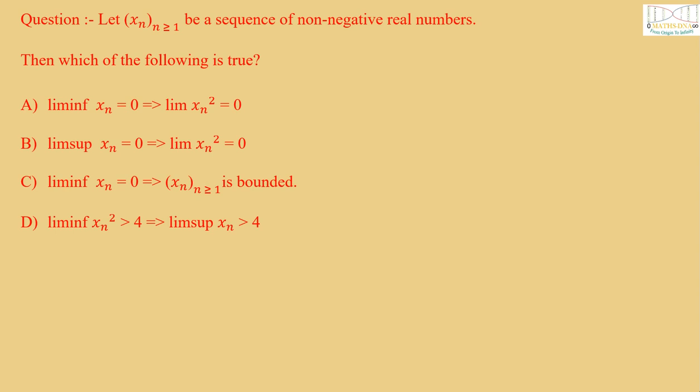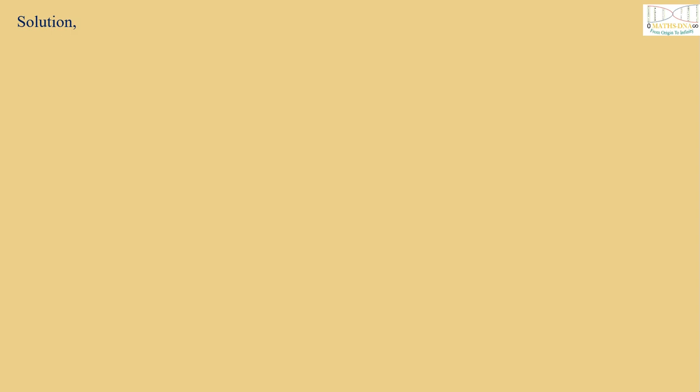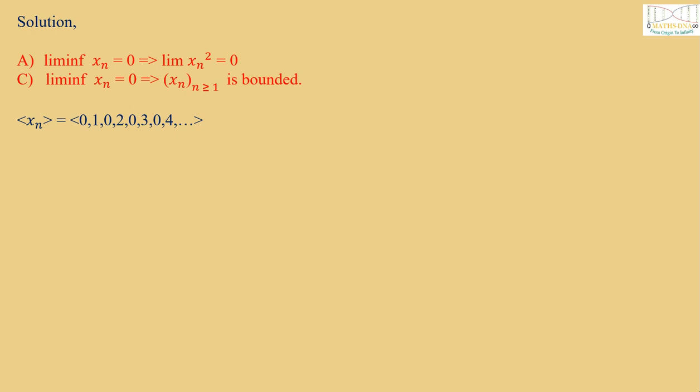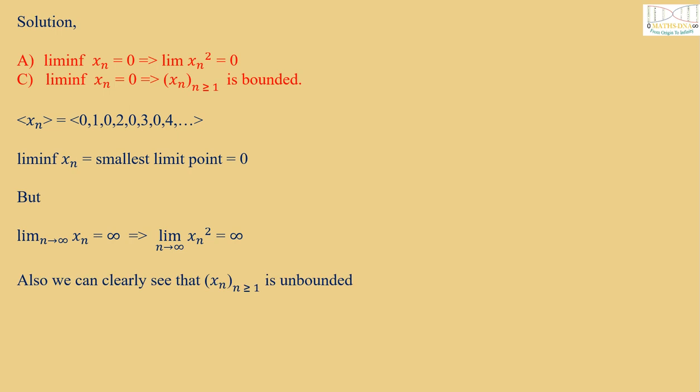We will solve this question by giving a counter-example to each option. For Options A and C, consider the sequence Xn = 0, 1, 0, 2, 0, 3, and so on. Then limit infimum Xn = 0. But limit as n tends to infinity of Xn = infinity, which implies limit Xn² is also equal to infinity. Therefore Option A is false. Also, we can clearly see that Xn is not bounded. Therefore Option C is also false.